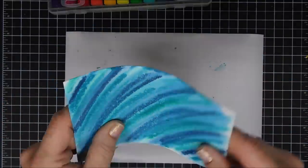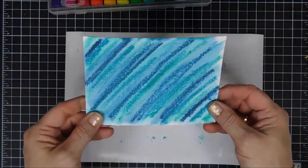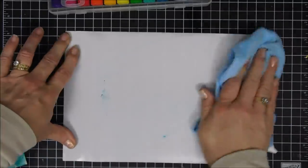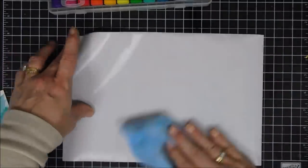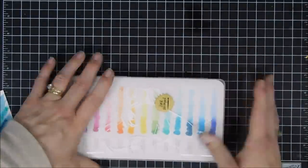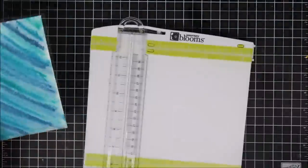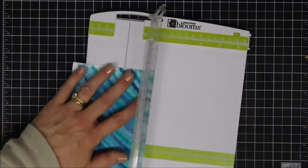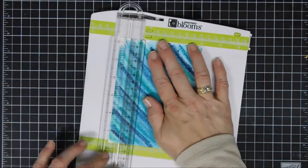Using my paper trimmer I'm going to trim down this background panel to five inches by three and three-quarters, so it'll leave me a little bit of a border on my card base. I'm going to trim it down on all four sides that way all you see is my background.